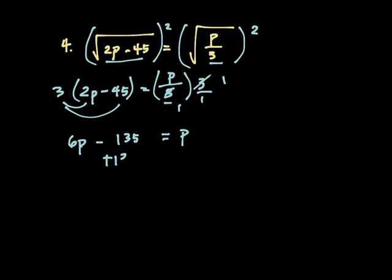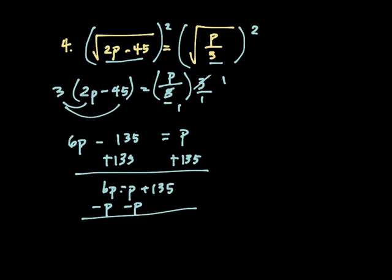I'm going to add 135 to both sides. So I have 6p equals p plus 135. I'm going to move this p to this side. So I have 5p equals 135.